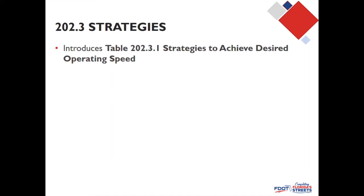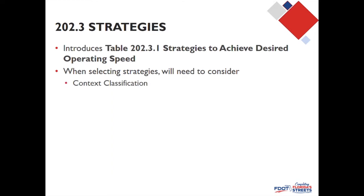Within the chapter there's a table of strategies to achieve particular operating speeds. To use this table, you need to think through several things. First, the context classification — you need to know where you fall on that diagram. Second, the design speed of the roadway. For a 3R condition, the road was already built at a certain design speed. But that may not be your desired operating speed — you may want traffic driving more slowly. So you need to know the desired operating speed you're trying to achieve.